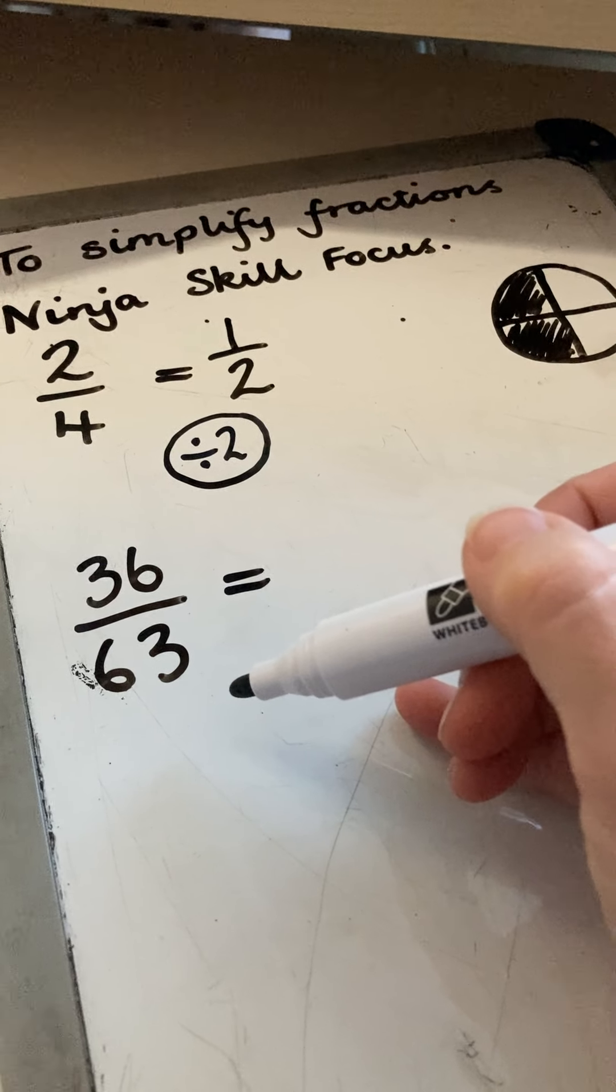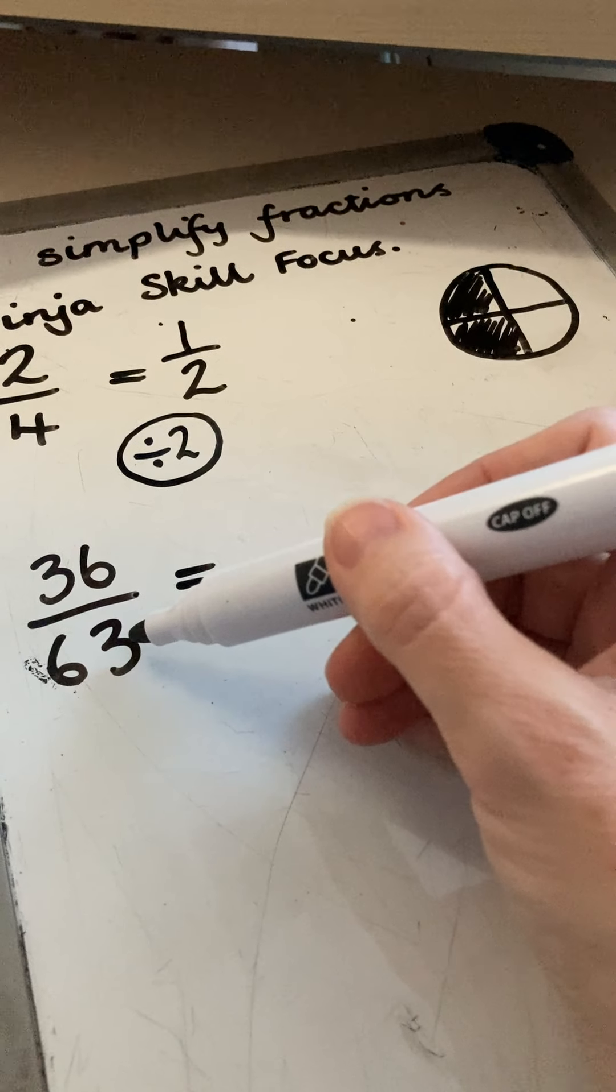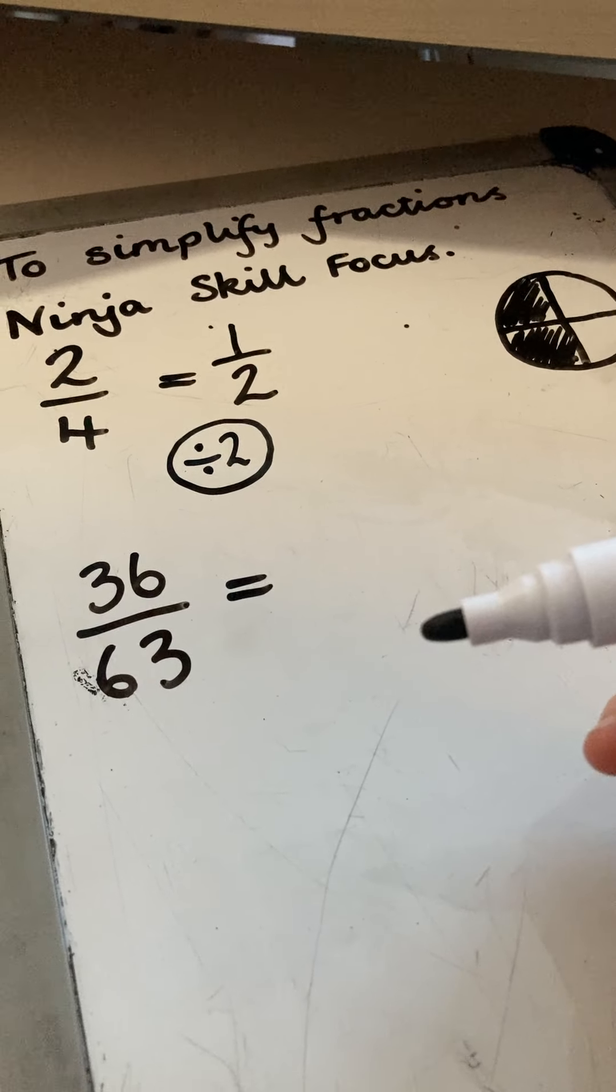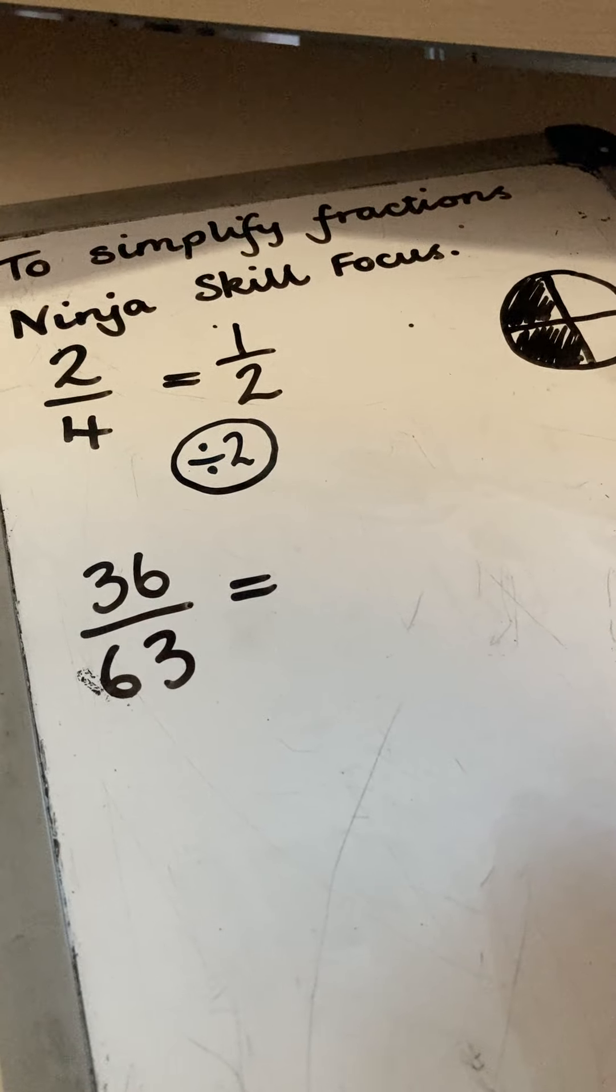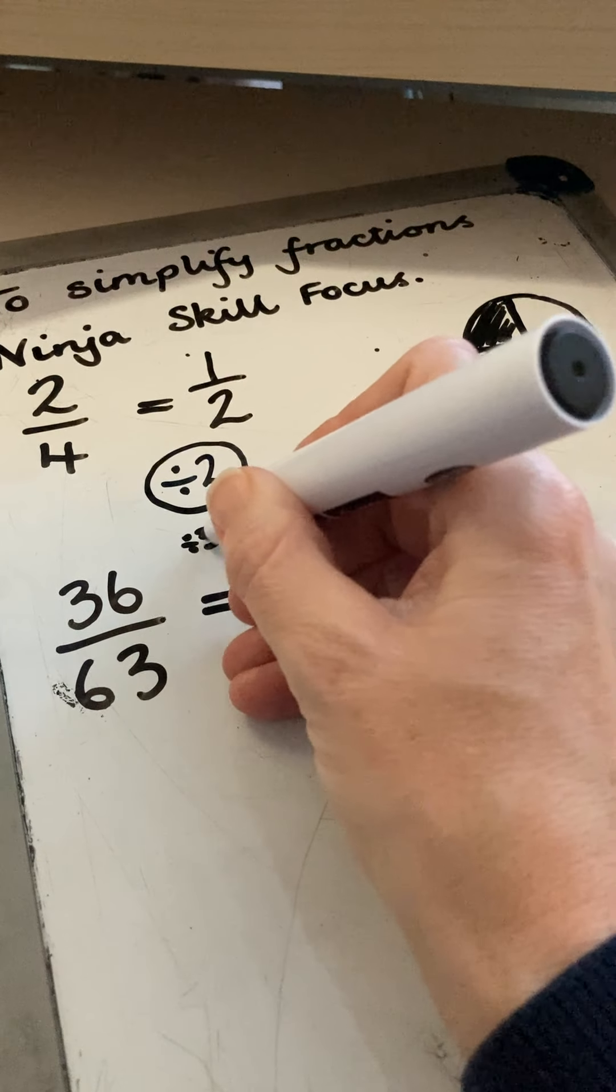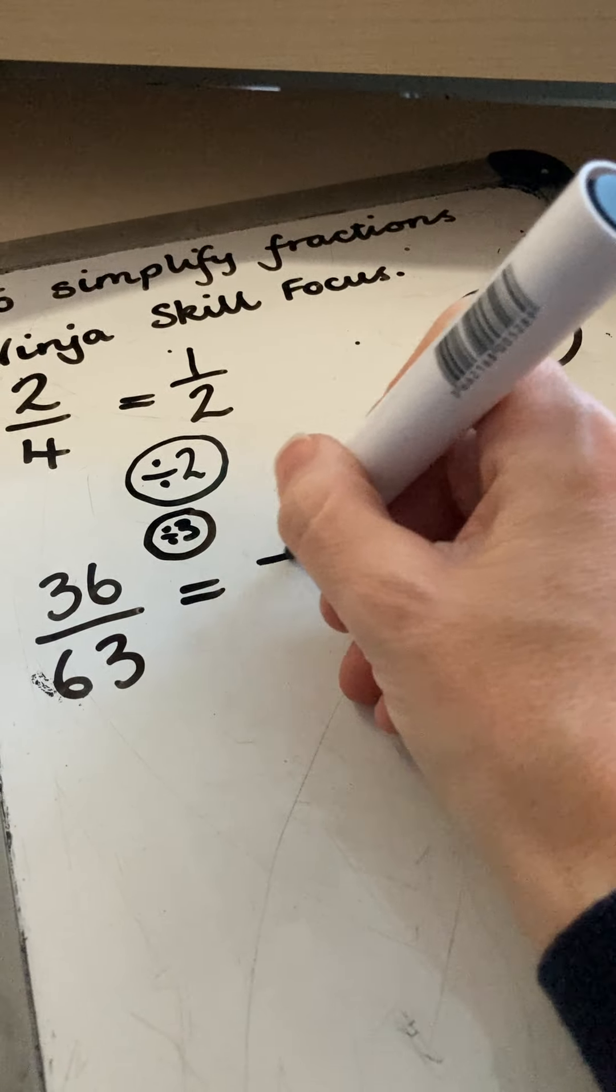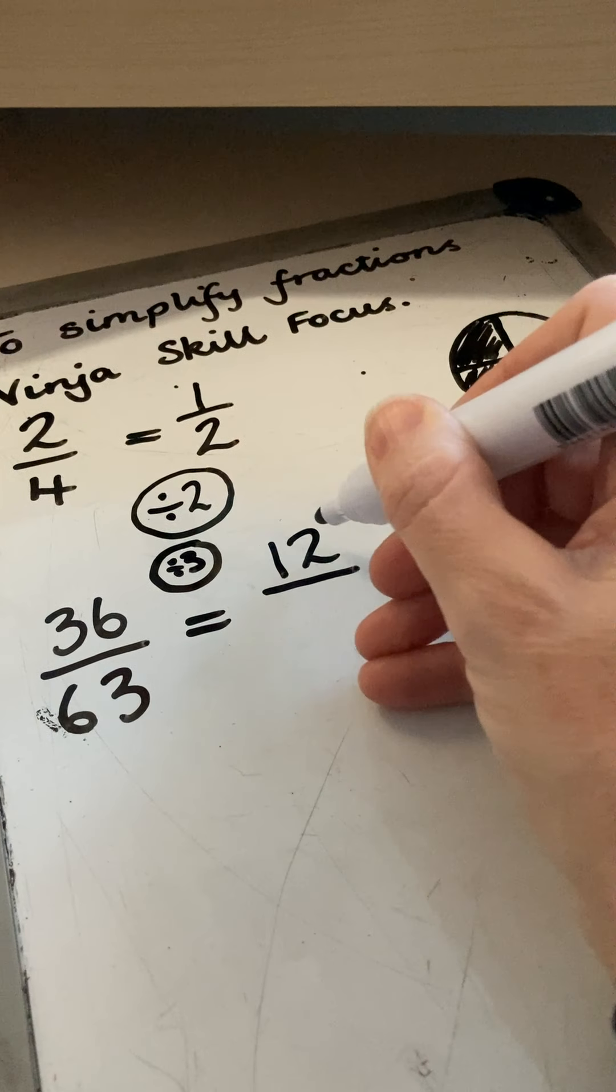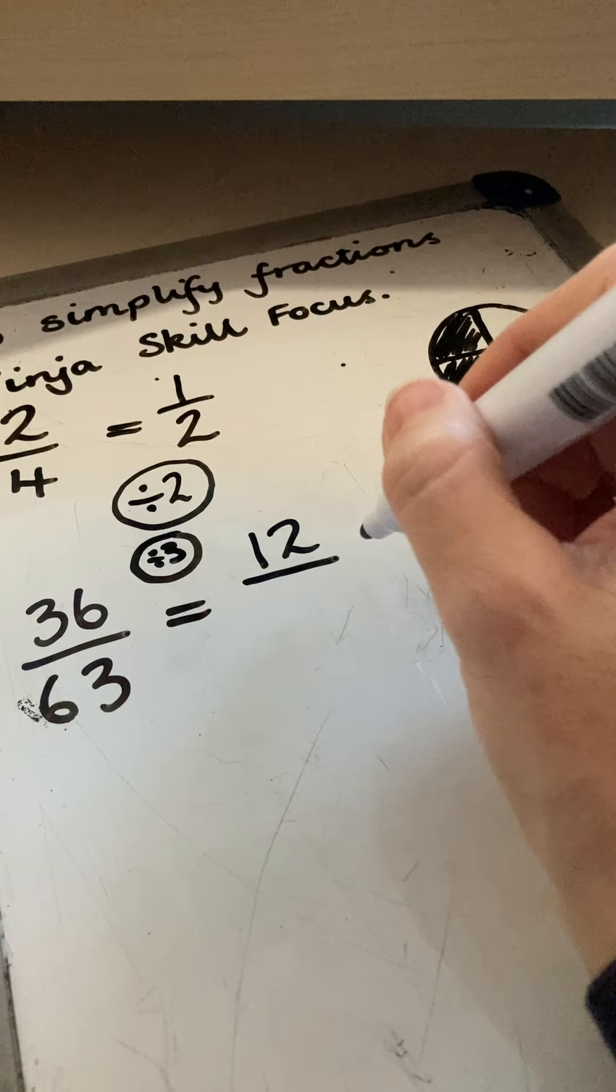I'm thinking they might be in my three times table because they both end in multiples of three. I know anything that ends in a three or a six is going to be in my three times table. So I'm going to divide them both by three to start off to make it a little bit easier for myself. So 36 divided by three is 12 because 12 times three is 36. I can use the inverse operation to check.